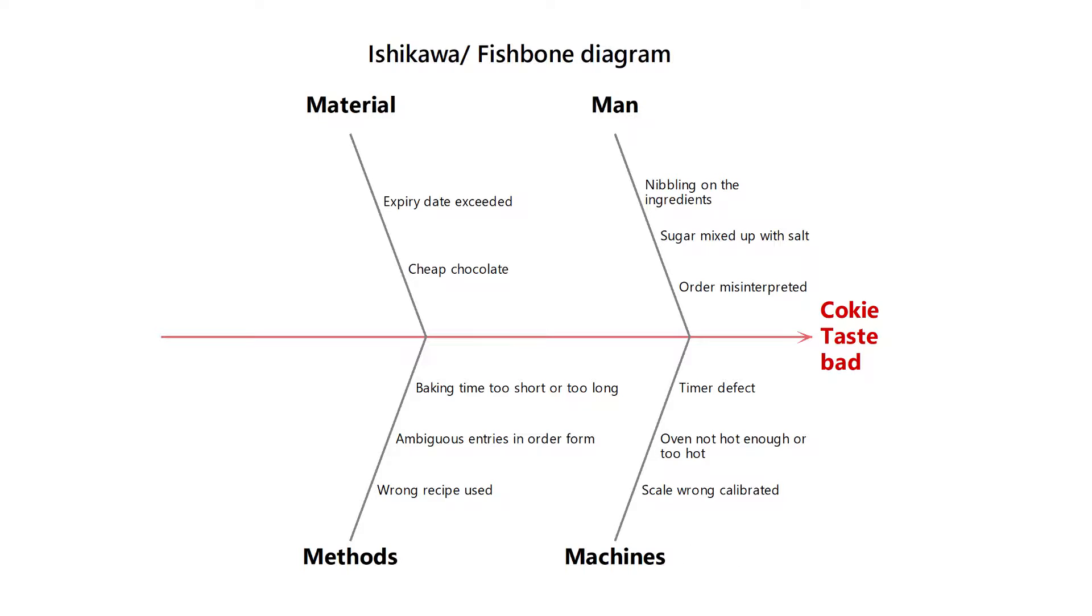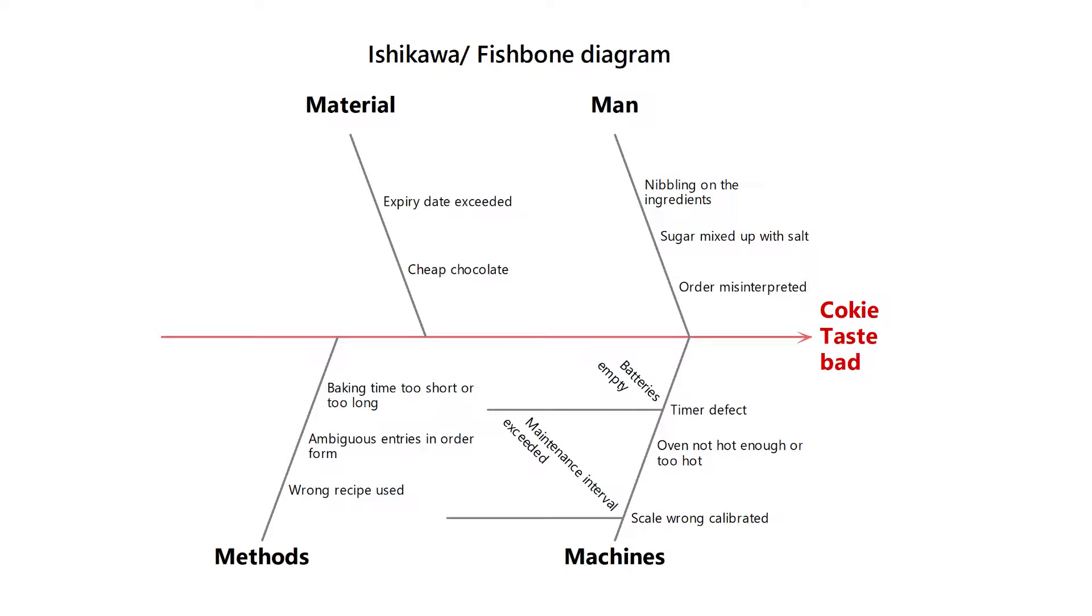This type of search with the Ishikawa Diagram ensures that no possible area of influence is overlooked. As a result, however, trivial associations are often mentioned, which in reality only have a small or no influence at all on the problem. And then the identified root causes, suspected some bones deeper in the fishbone, will also have little to do with reality.